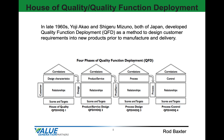We're going to explore quality function deployment, also known as house of quality. It was developed in the late 1960s as a method to design customer needs and requirements into new products prior to manufacture and delivery. It has since expanded into the development and delivery of services as well.